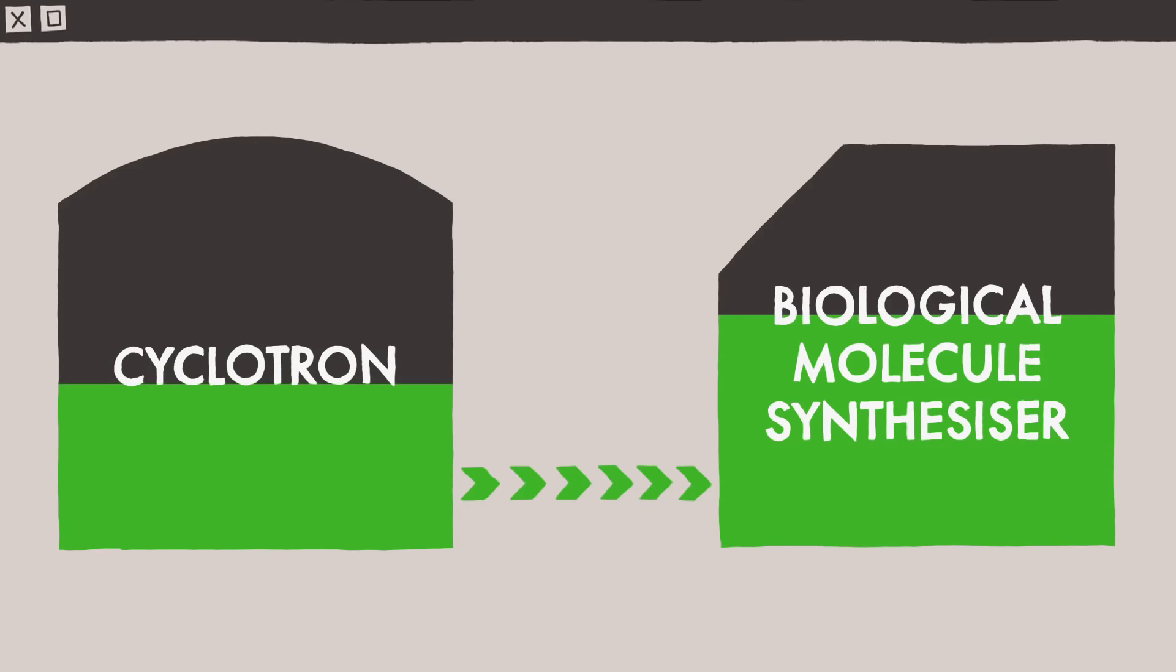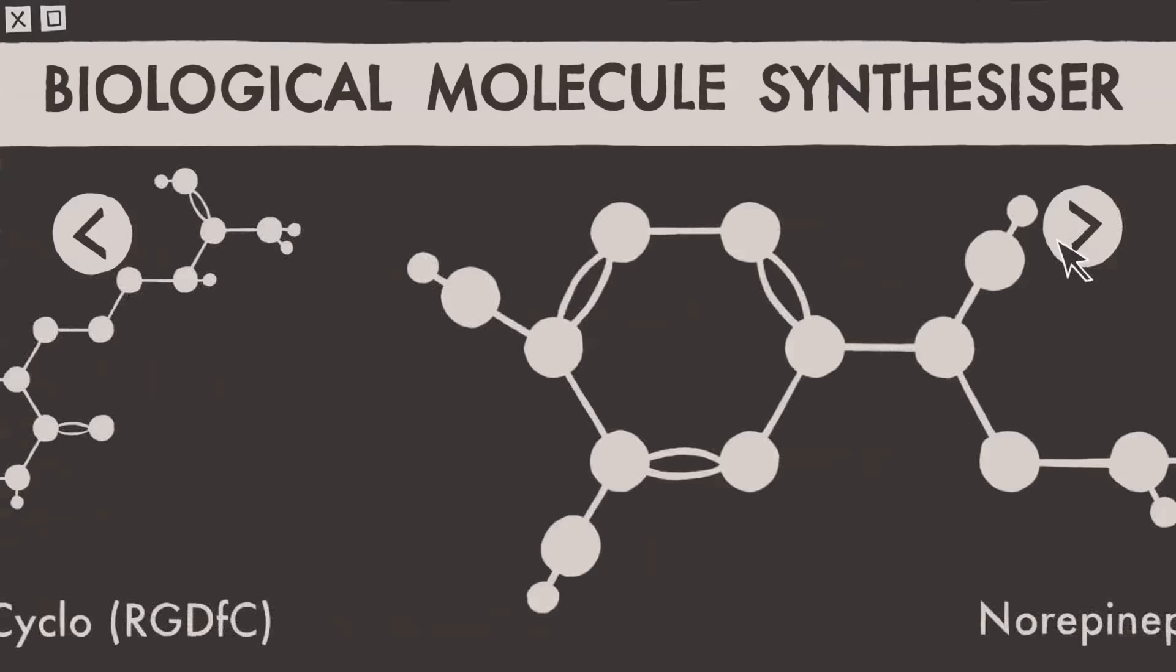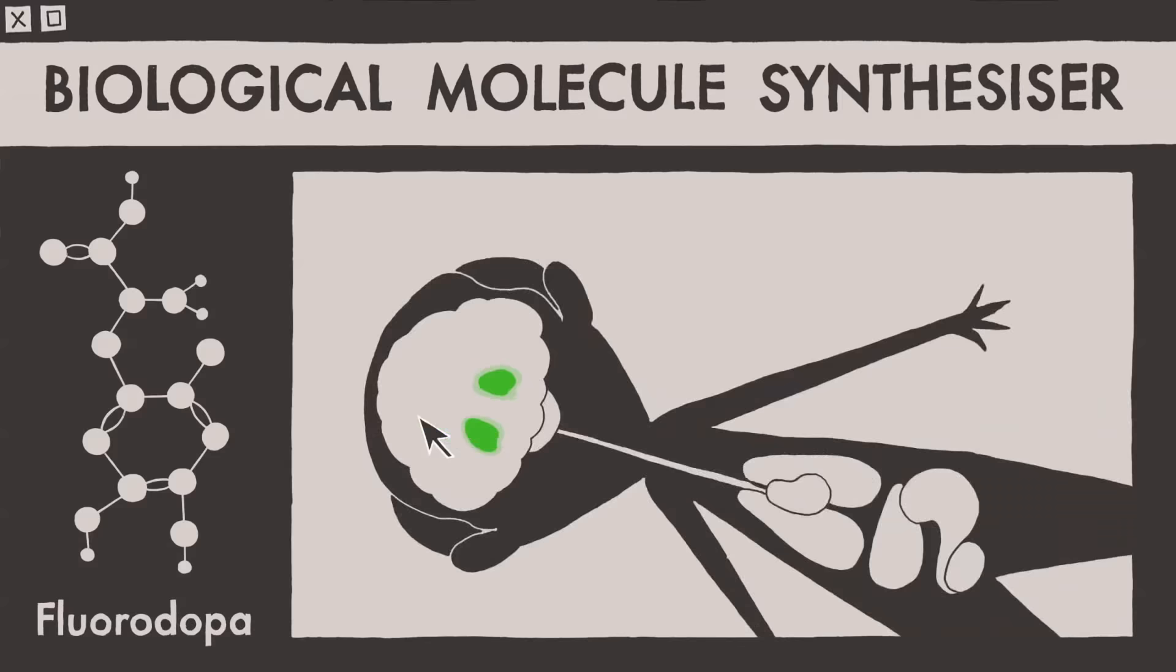This is what makes PET so unique. The molecule could be anything—a sugar, a protein, a hormone. Each one is tailored to a specific function in the body and will show doctors where in the body that function is happening.